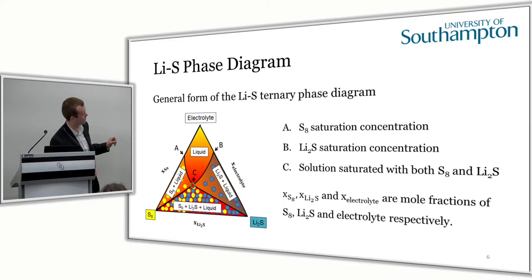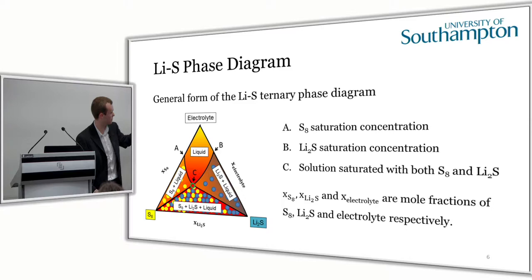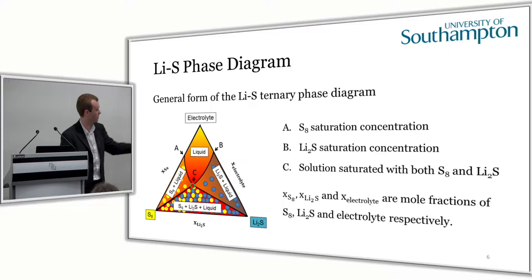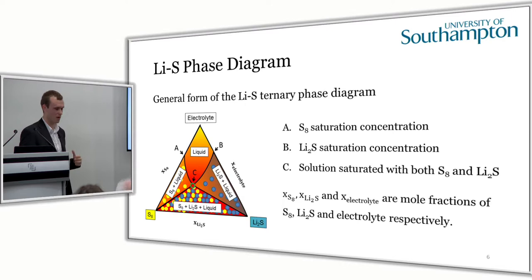The key thing to emphasize is that only in the three-phase region are we truly saturating the electrolyte with respect to both sulfur and lithium sulfide. This means we can add more sulfur or more lithium sulfide, or both, and we will not change the concentration of sulfur in terms of polysulfides in solution, nor the composition. We'd also find here the sulfur saturation concentration, the lithium sulfide saturation concentration, and the congruent solution point — a minimum concentration required to reach the ternary phase region.